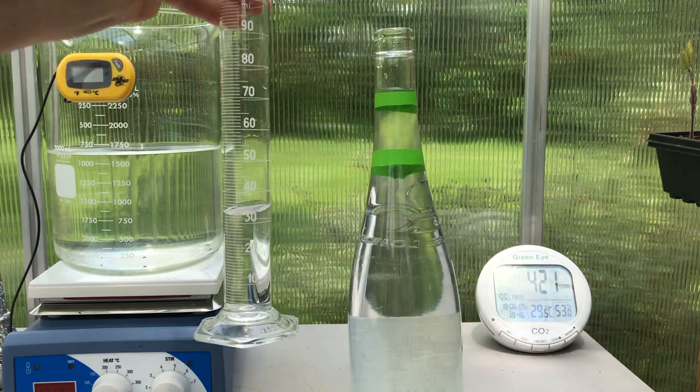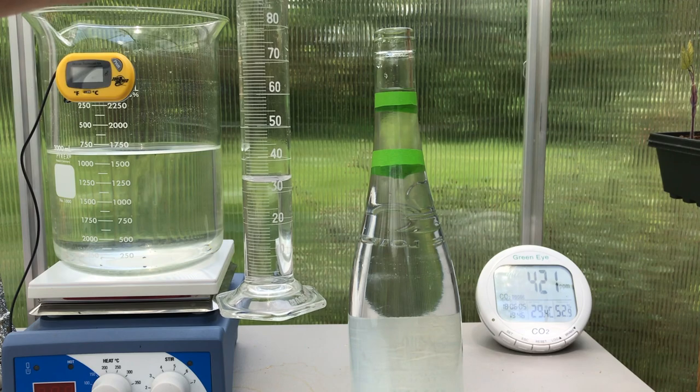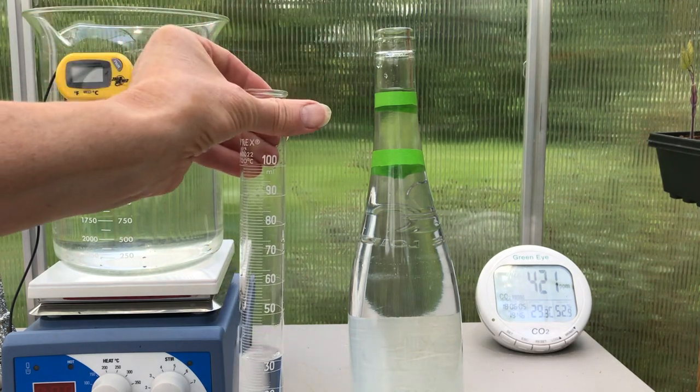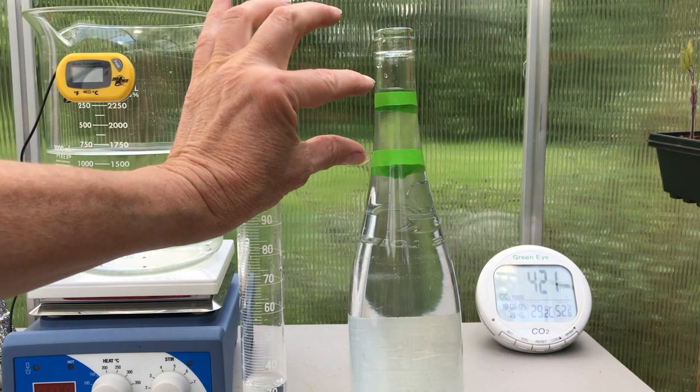Now, I can subtract the new reading in the graduated cylinder, which looks like 33, from my 50 milliliters that I started with for a difference of 17. And that's what our change in volume is.